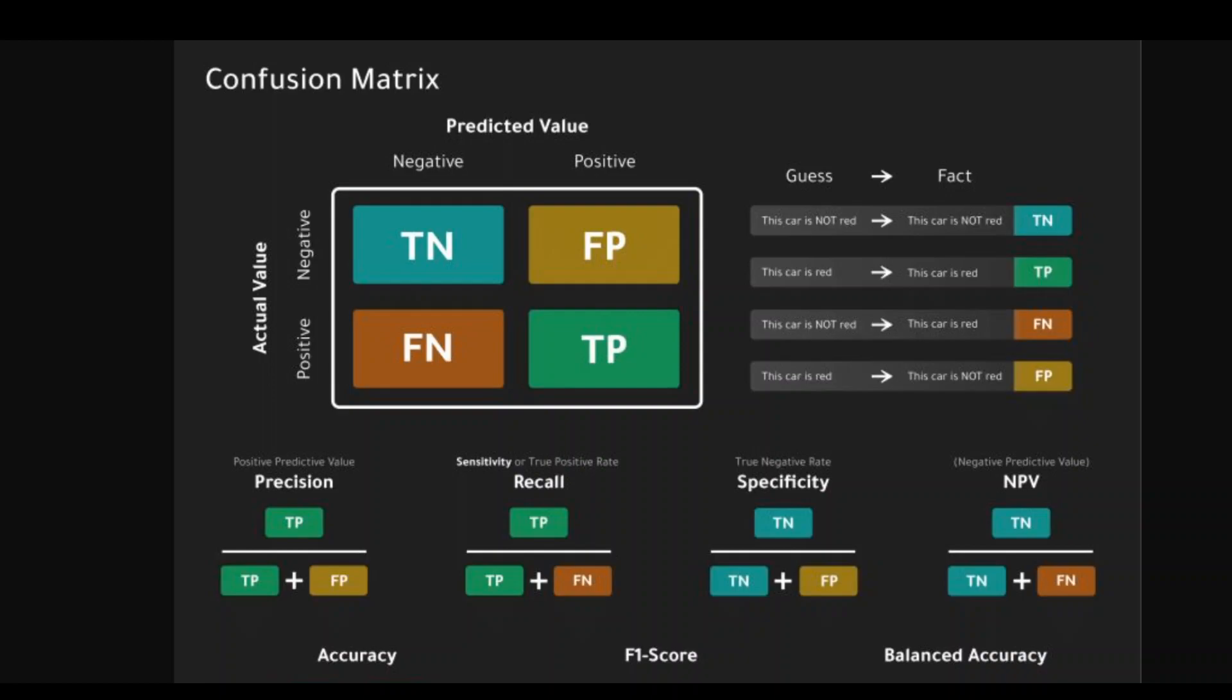This video is a quick introduction into the confusion matrix in machine learning. A confusion matrix is a table that is used to evaluate the performance of a machine learning model.